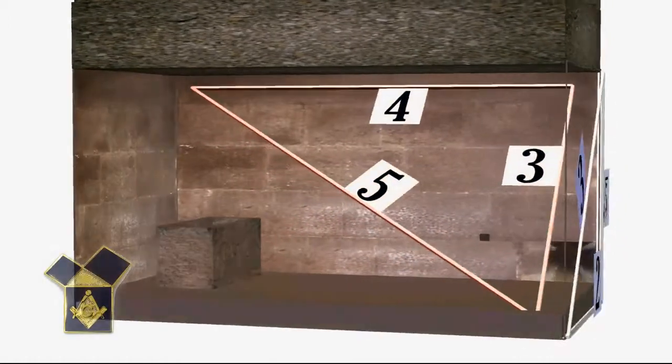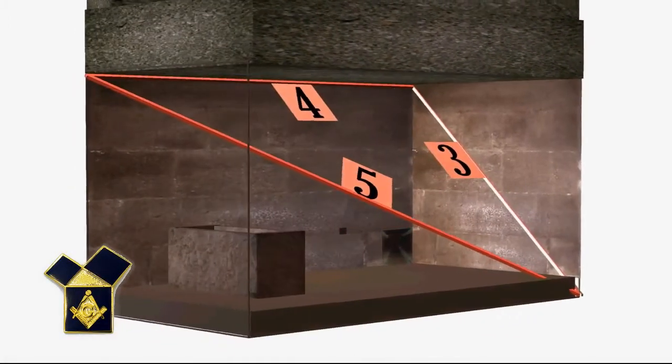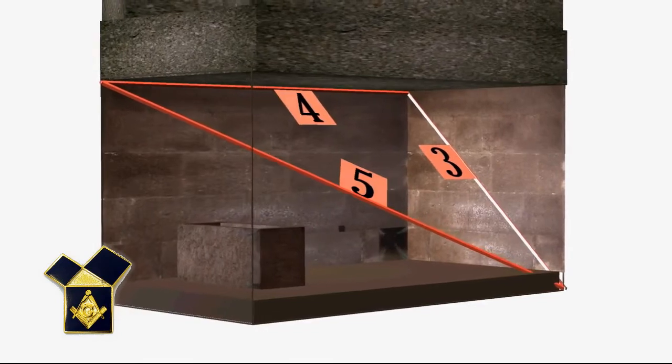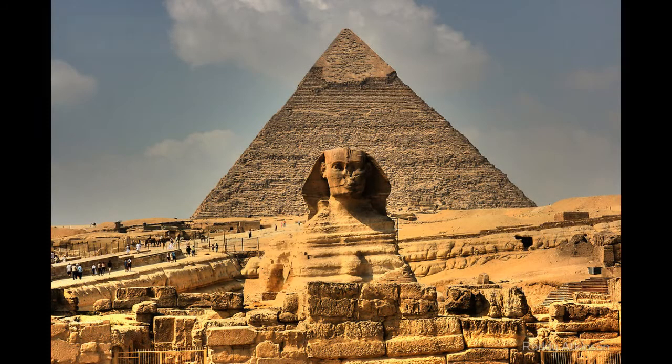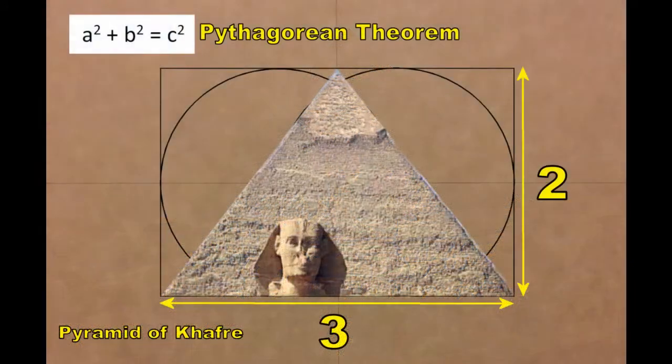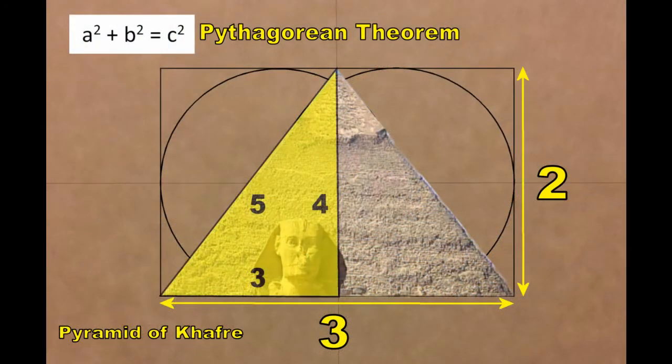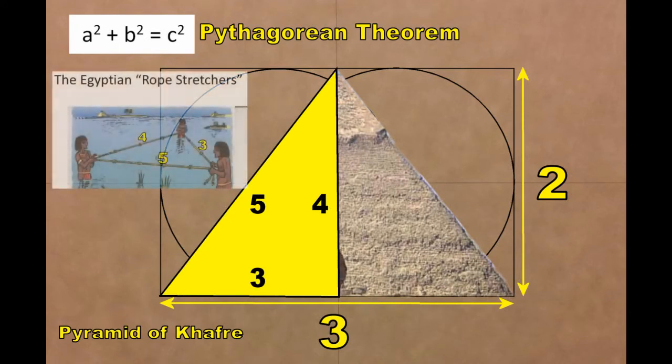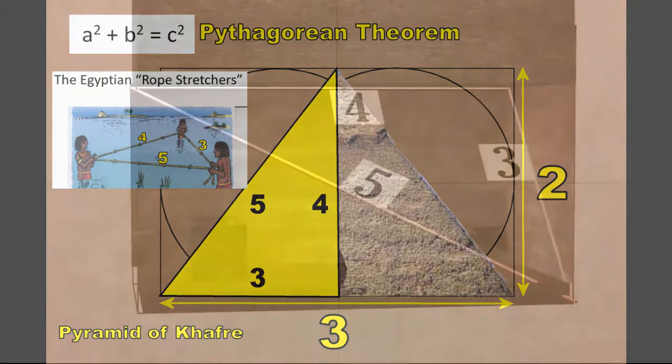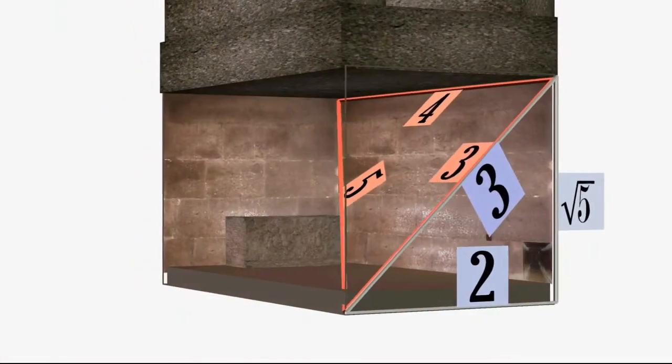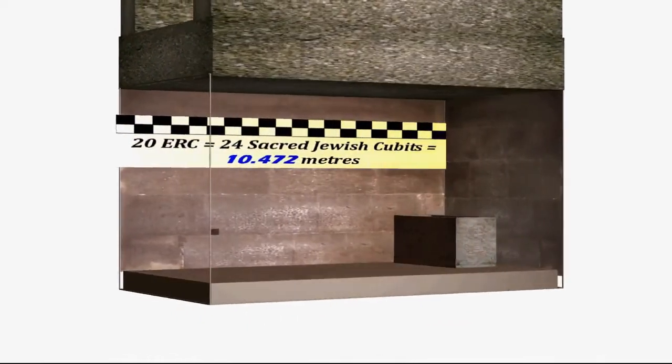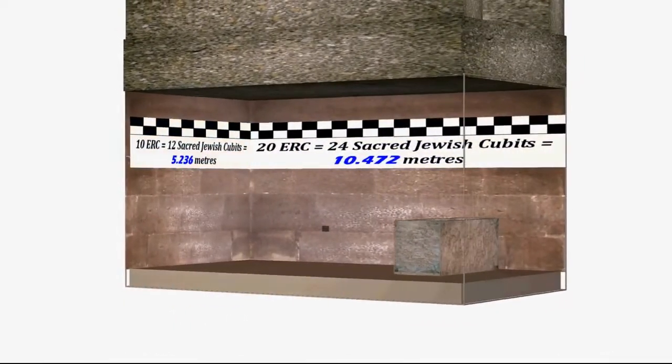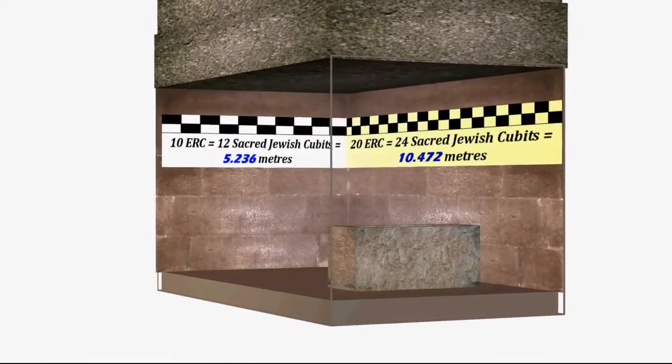But for instance, what we have is this very important feature, everyone should probably remember it from school, the 3-4-5 triangle, the first of the Pythagorean triplets. Now, it's not just in the Great Pyramid, you'll also find it in Khafre's Pyramid, the second of the three Great Pyramids of Giza, but also the Egyptian rope stretchers with the 3-4-5 triangle as well.